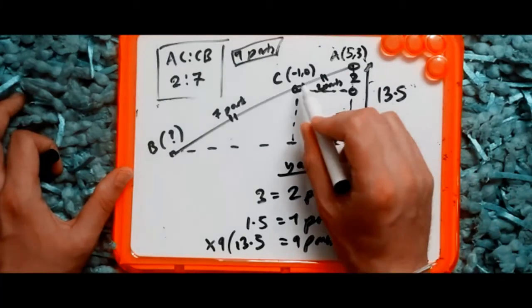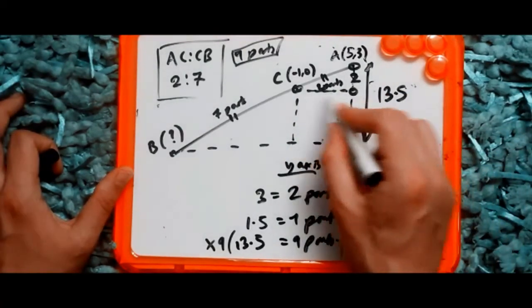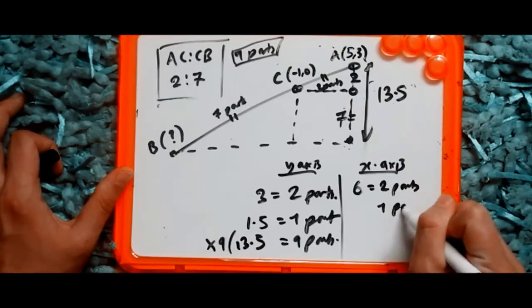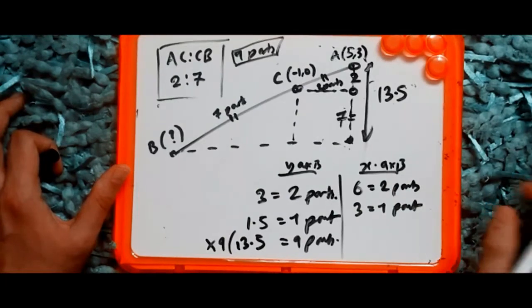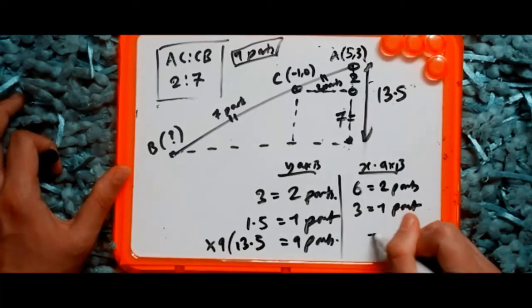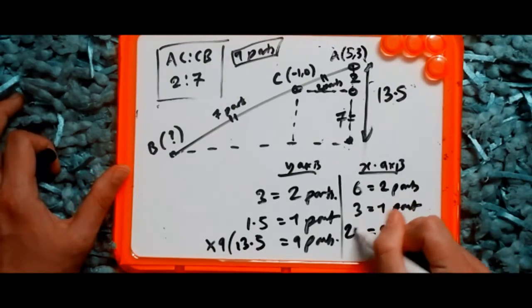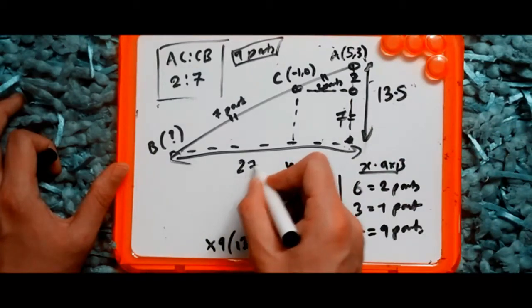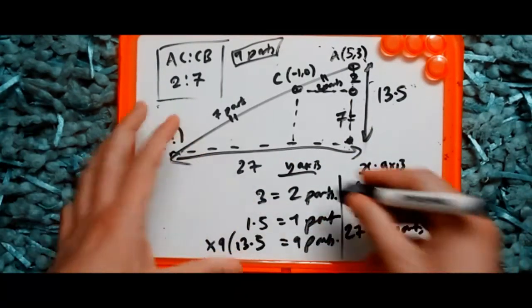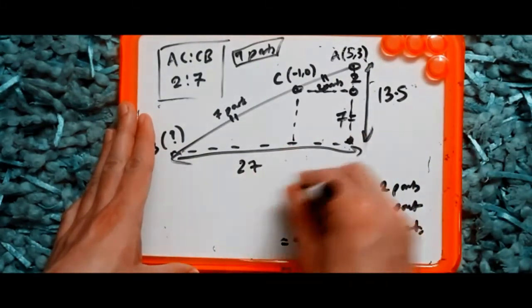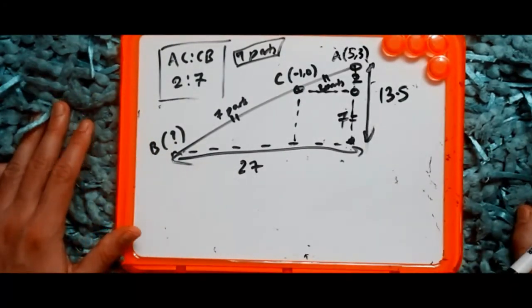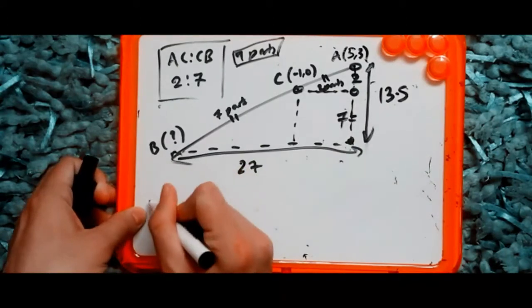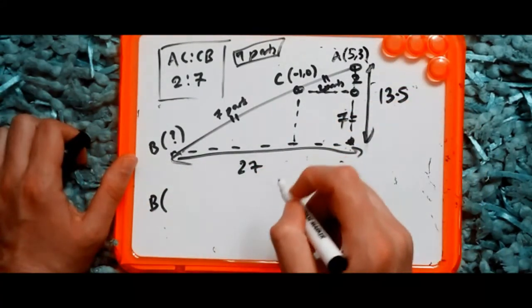Now let's work out the x-axis. From minus 1 to 5 is a difference of 6, which also represents two parts. So one part equals 3. To get the full nine parts: 3 times 9 is 27. So the horizontal distance from B's x-position back to A's level is 27. To get B's x-coordinate, we go back 27 from 5: 5 minus 27 gives us minus 22.